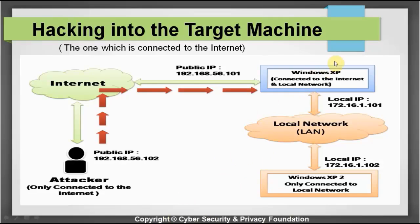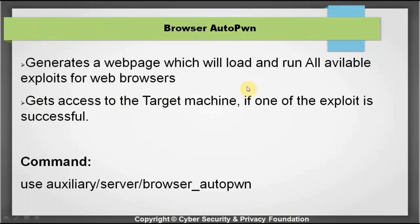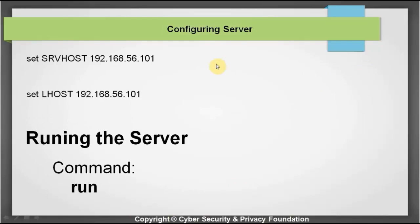The attacker is going to use an attack called Browser Autopwn. This generates a web page and loads all available exploits for web browsers. If successful, the attacker will gain access into the target machine. The command is: use auxiliary/server/browser_autopwn. You then configure the server by setting srvhost to the attacker's IP address, and also set lhost to the attacker's IP address.